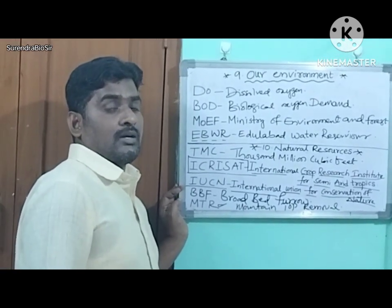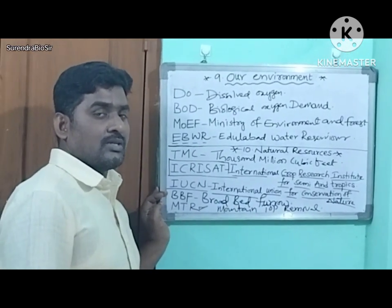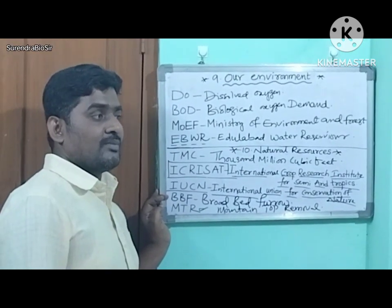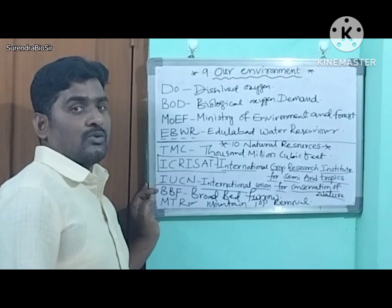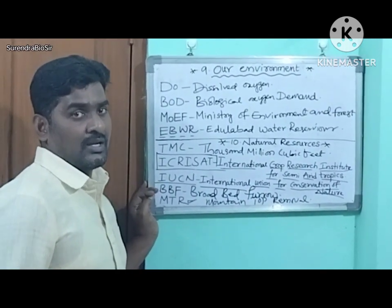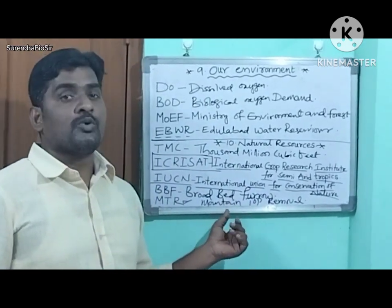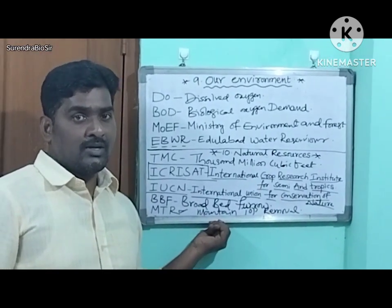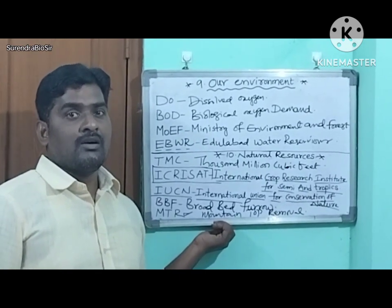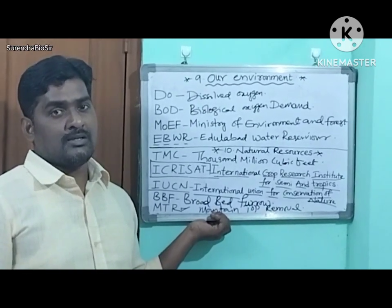So these are the total abbreviations in our biology textbook. One more: when you see Thalassemia, there is HLA — Human Leukocyte Antigen. This is about your biology abbreviations. I hope you all understood. Thank you for supporting me. Please do subscribe and like and share my channel. I am Mr. Suryadhar, your biology teacher.